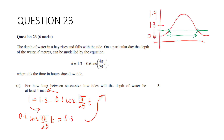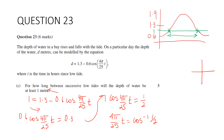Dividing both sides by 0.6: cos(4π/25 · t) = 0.3/0.6 = 1/2. So 4π/25 · t = arccos(1/2). Cosine is positive in the first and fourth quadrants. In the first quadrant that is 60°, so π/3. And in the fourth quadrant, 2π − π/3 = 5π/3.